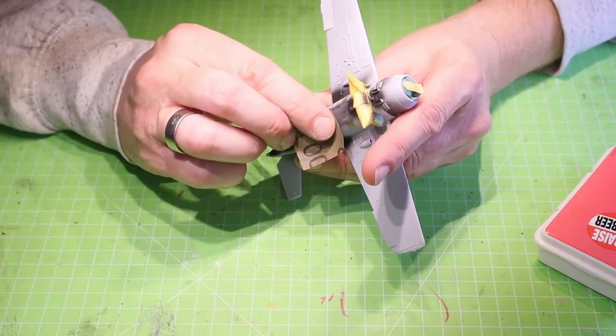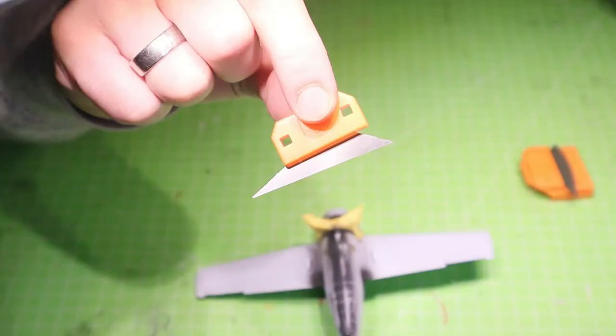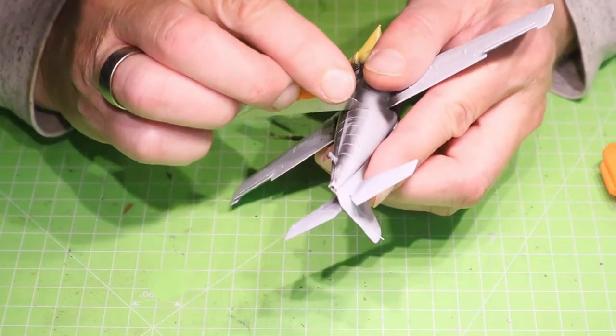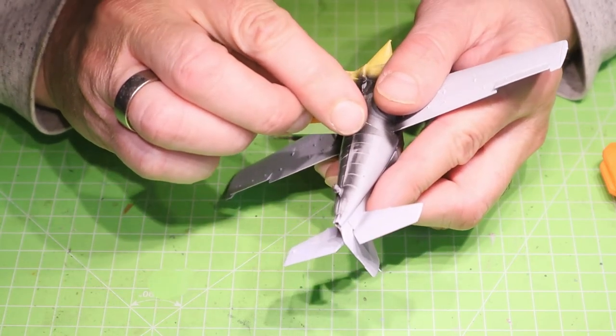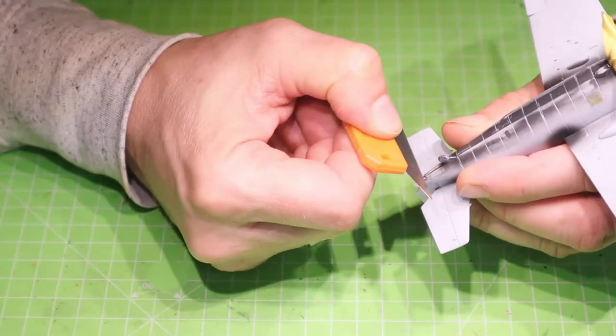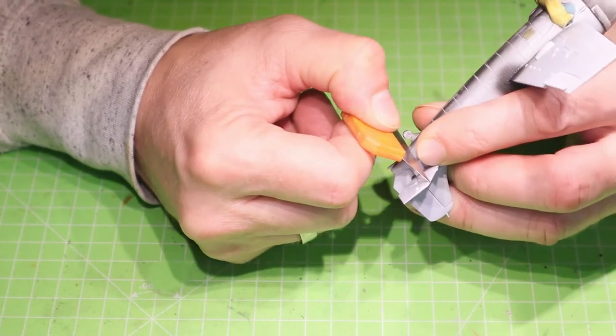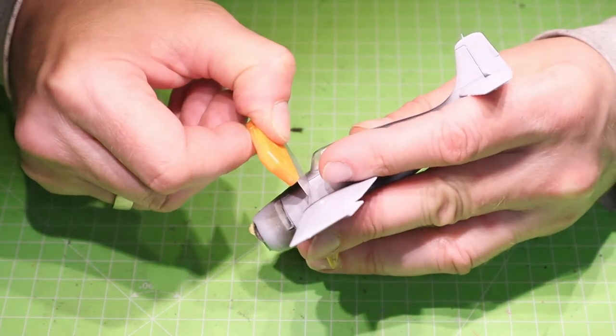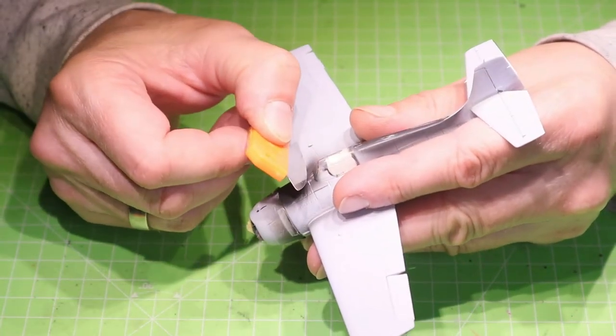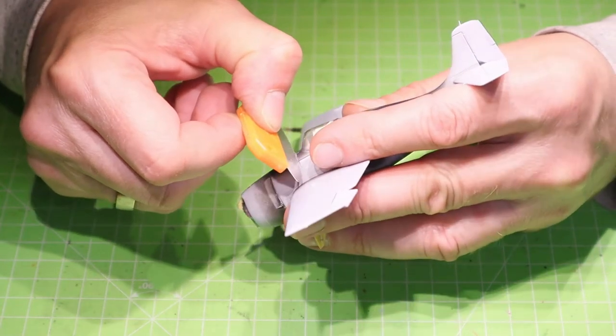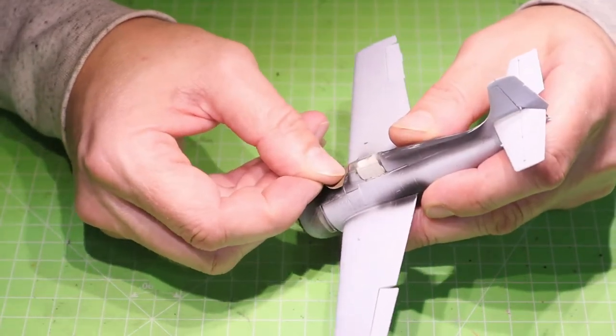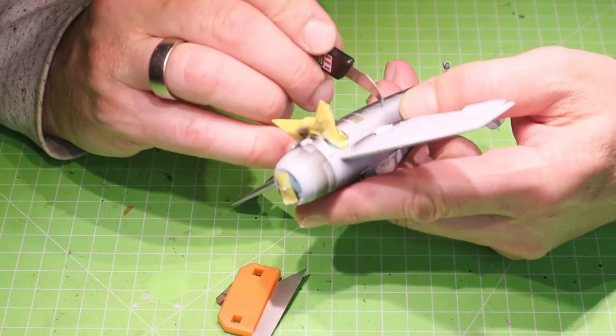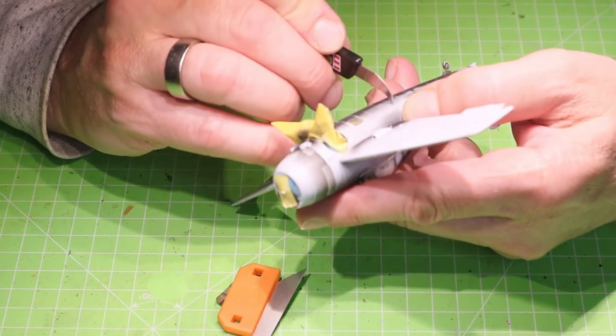So this is the whole trick. After that, I was just rescribing the panel lines with a saw first. This is a very cheap hobby saw. First, use the saw for the panel lines. Then clean it a bit with sanding paper. And after that, rescribe them again. For this, I used the Revell tool.